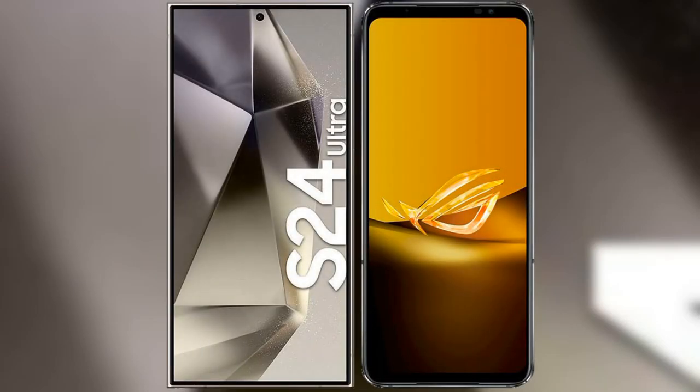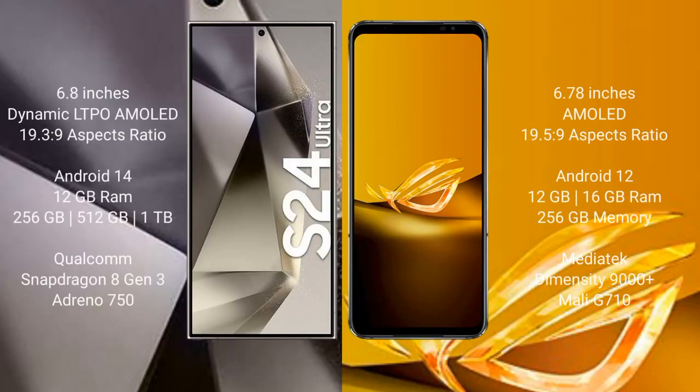I will compare the new Samsung Galaxy S24 Ultra with Asus ROG Phone 6D. Samsung Galaxy S24 Ultra comes with a 6.82-inch Dynamic LTPO AMOLED display. Asus ROG Phone 6D comes with a 6.78-inch AMOLED display.